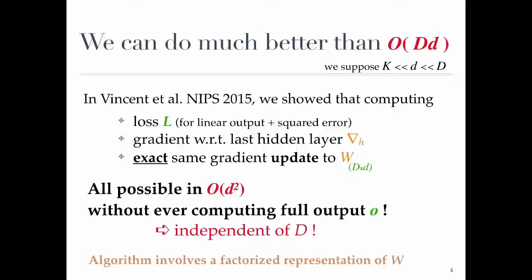What I showed at NIPS last year is that for linear output and squared error, it's possible to do much better than O(D×d). The gradient with respect to the last hidden layer, the exact update to W, and the loss can all be computed in O(d²) without ever computing the full output O. So it's independent of big D — we can have an extremely large layer and the time is independent of it.